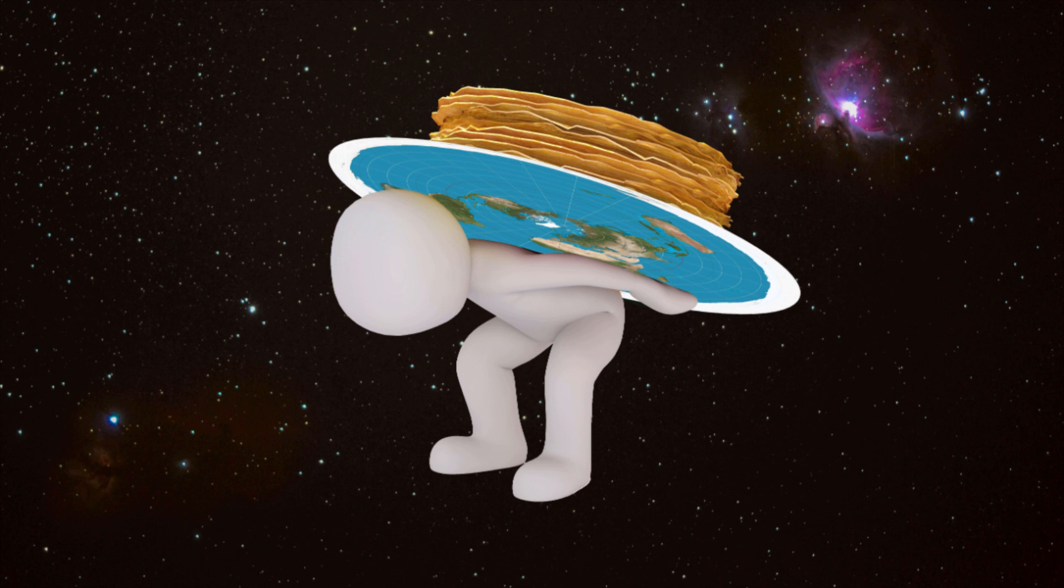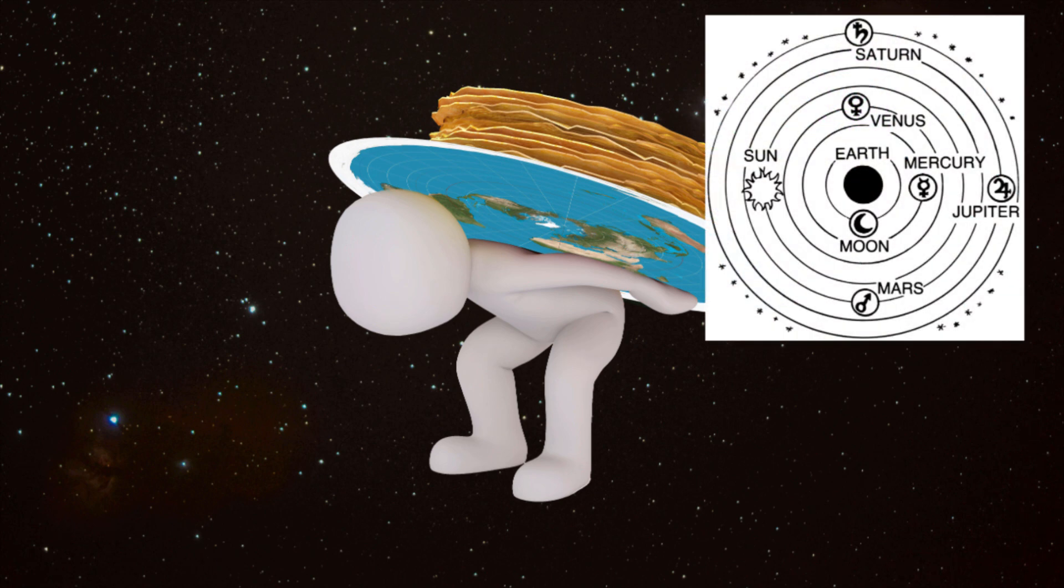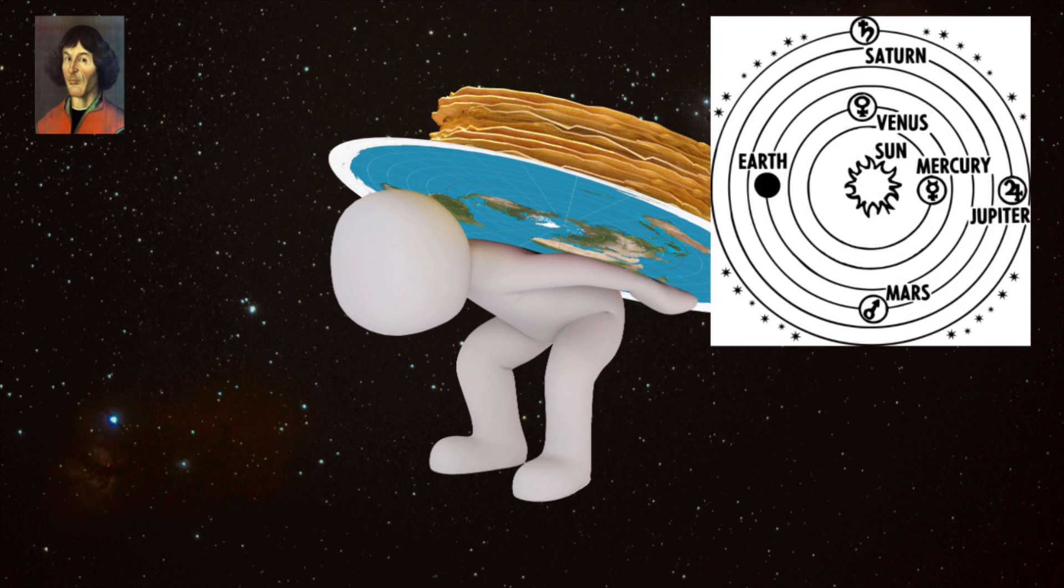For much of the past 2,000 years, astronomers have believed that the Earth was the center of the universe and that all other objects orbited around it. But in the early 1500s, Nicholas Copernicus developed his idea of heliocentrism, placing the Sun at the center, not man.